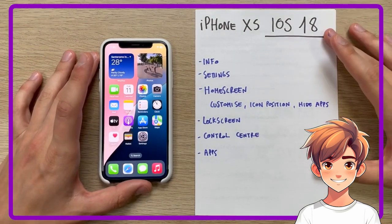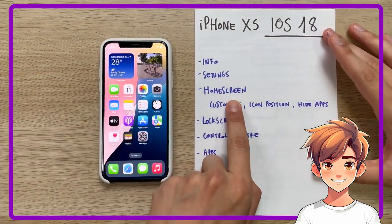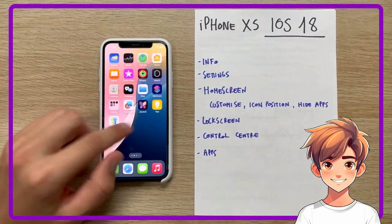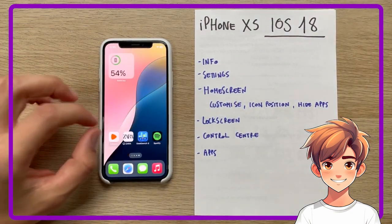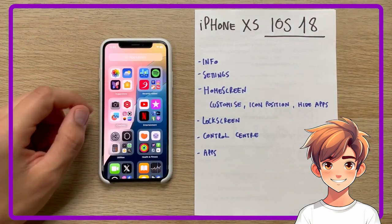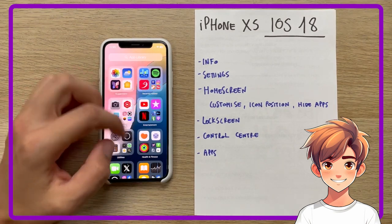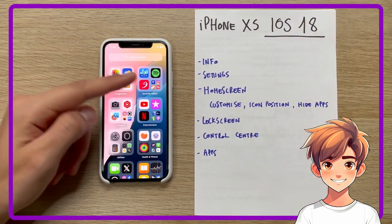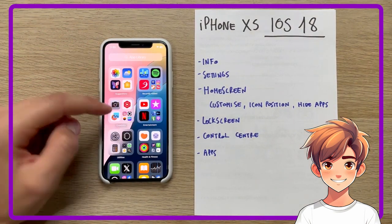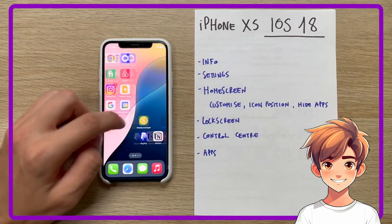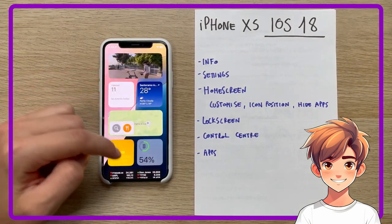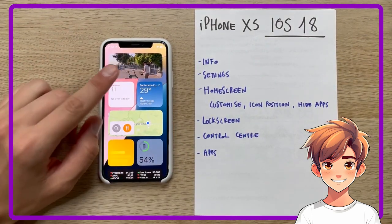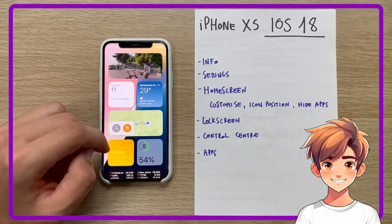At this point, let's focus especially on the home screen, which has several new features. First of all, the first thing I noticed is that from an aesthetic point of view, the transparency and blur effect is no longer present, both under the app library and under the widgets panel. We now have the background directly and above it the layer with the widgets.